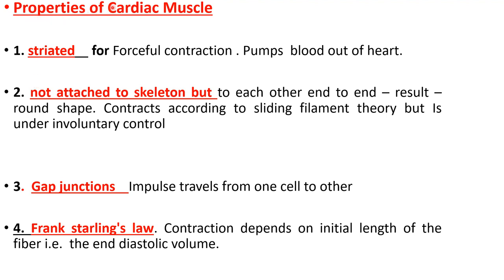The properties of cardiac muscles that differ from striated muscles: first, it is striated for forceful contraction, but the fibers join each other in end-to-end anastomosis and form a circular viscus in which blood is stored and then pumped out of the heart. Second, it is not attached to the skeleton — the cardiac muscle fiber is attached end-to-end resulting in a rounded viscus formation. The cardiac muscle fiber contracts according to the sliding filament theory just like skeletal muscle, but it is under involuntary control.